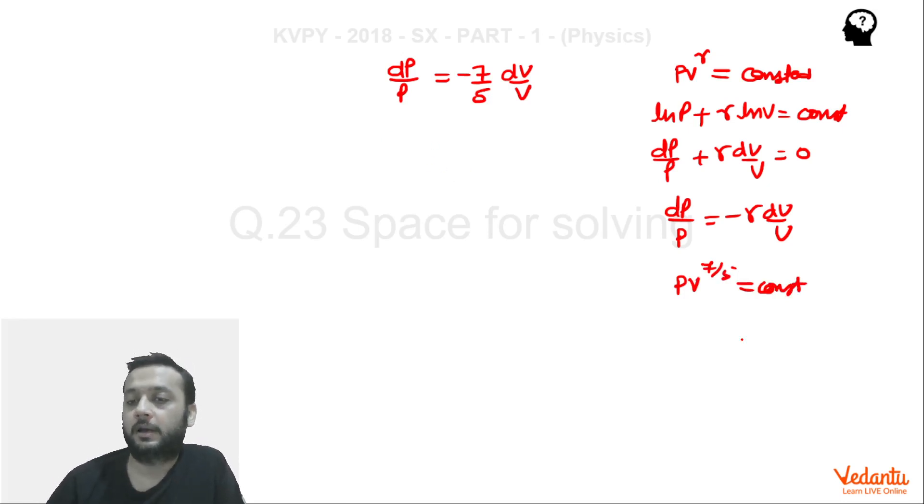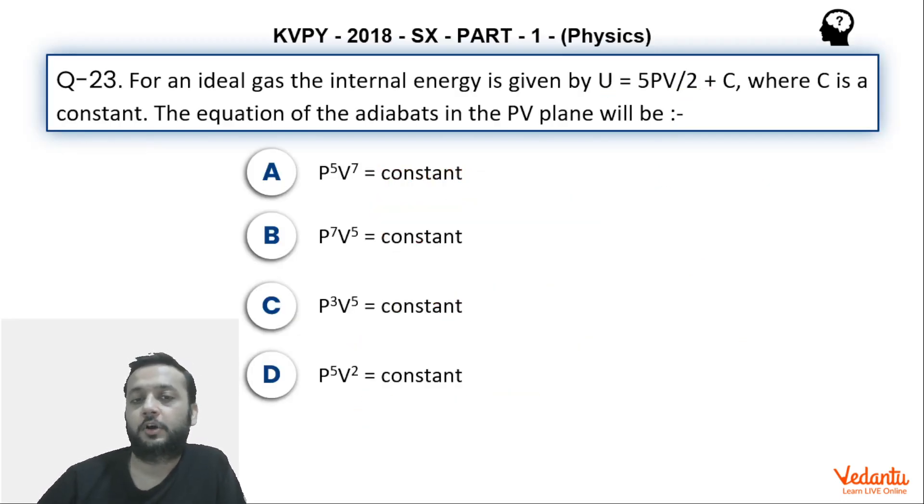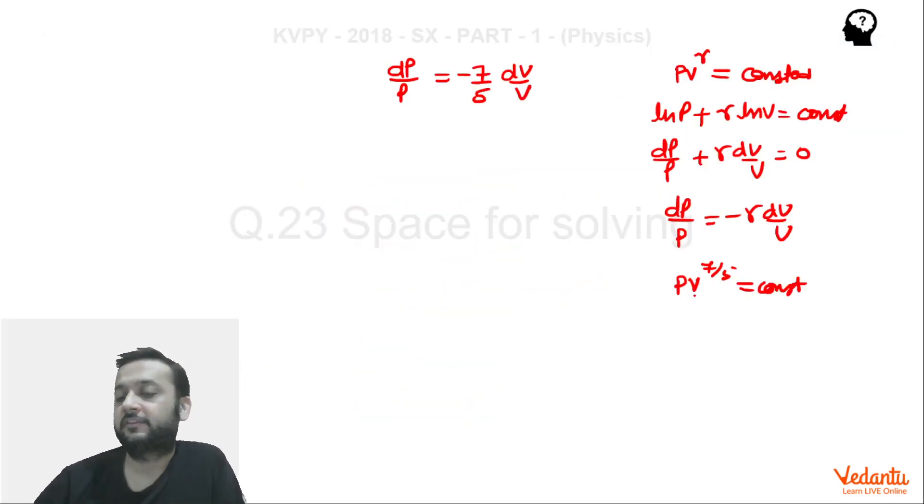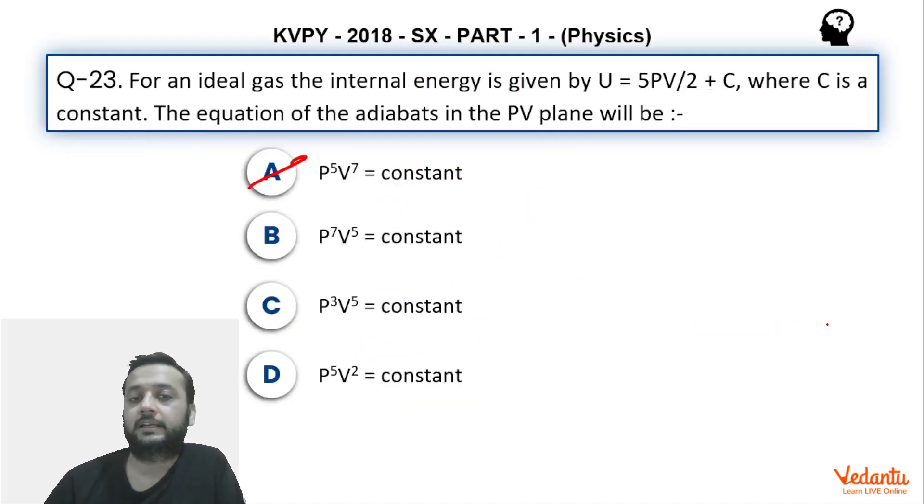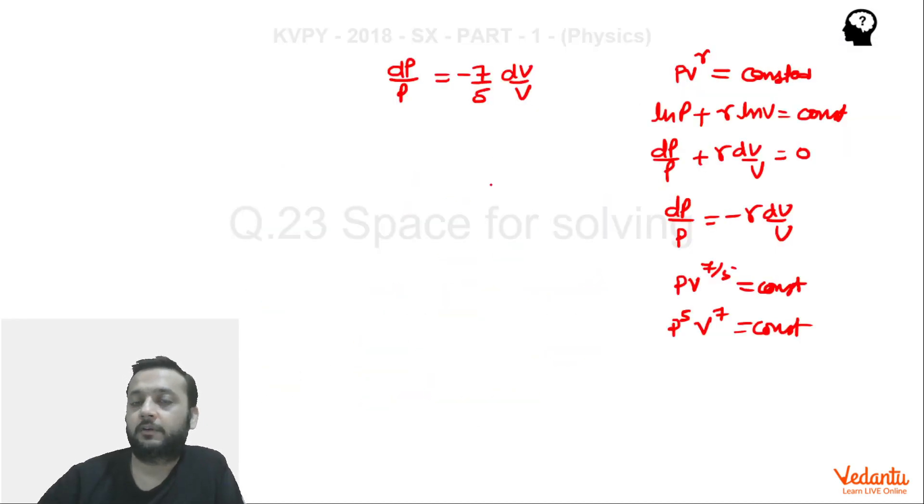So if you go back to options, option A matches because this will become P ki power 5 into V ki power 7 constant, correct. So then option A will be the correct answer, okay.